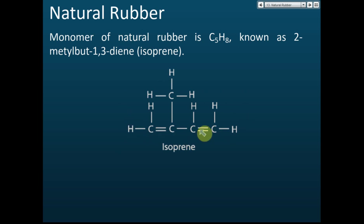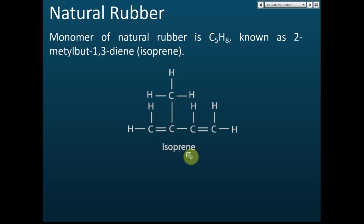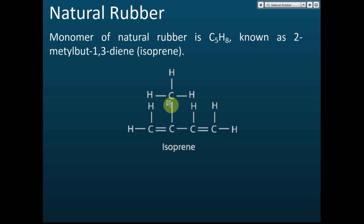The monomer of natural rubber has five carbons and eight hydrogens, with two double bonds — therefore it is an alkene, specifically a diene. It is called isoprene, also known as 2-methylbut-1,3-diene. The methyl group is attached to the second carbon, and the double bonds are at positions one and three, hence 1,3-diene.